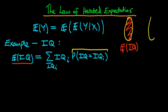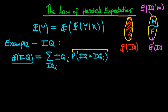Another way would be to break it up into subpopulations. We could define those individuals who are male and those who are female, then work out the average level of IQ given that an individual is male — the expectation of IQ given male — and likewise the average IQ given female. To get the overall unconditional expected value of IQ, we take a weighted average of these two terms. And that's what the law of iterated expectations tells us.